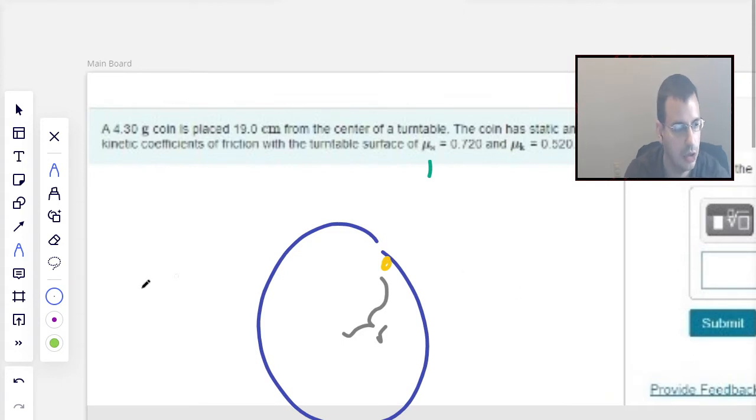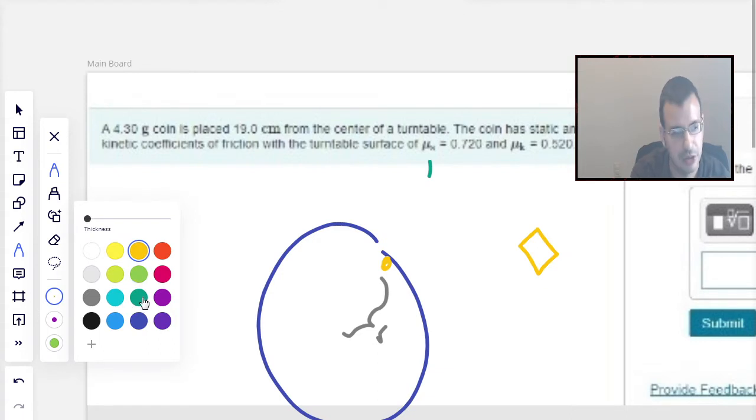And it's spinning. So looking at the coin, I'm going to draw the coin over here as a square. I could do a circle. I probably should have done a circle, hindsight.